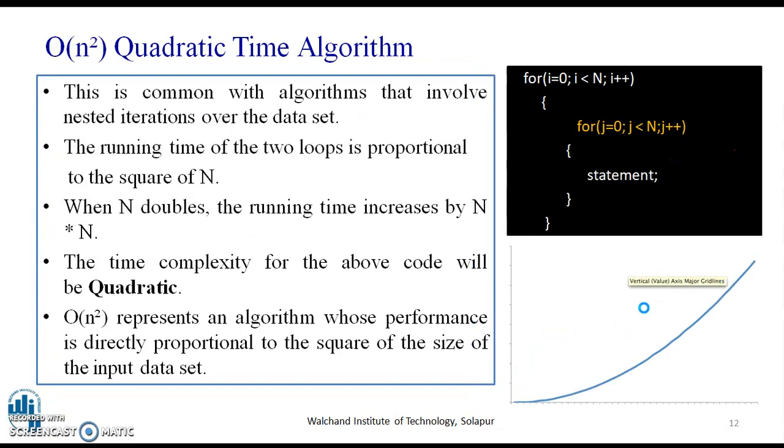Next, is the quadratic, O(n²), quadratic time algorithm. Consider the given piece of code. Here, there are two for loops. This is common with algorithms that involve nested iterations over the data set.